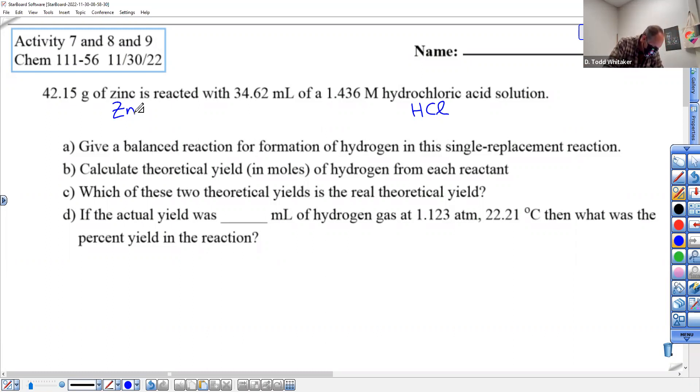All right, so give a balanced reaction for formation of hydrogen in the single replacement reaction. So there's our two reactants. Zinc is reacting with HCl. It didn't say anything about states. If it doesn't say anything about states, I don't have to put states. Good.